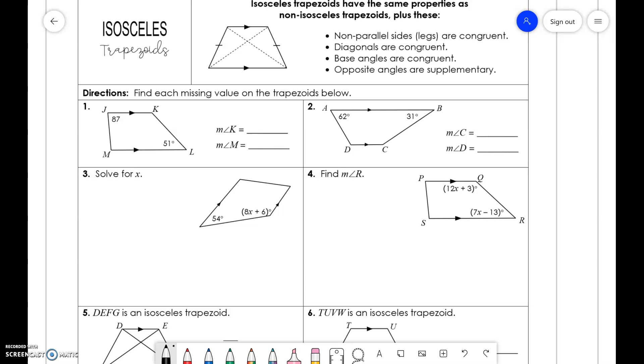So, for number one, this is a non-isosceles trapezoid, so we have to remember that those consecutive angles are supplementary. So, if you know this one is 87, to find angle M, we would do 180 minus 87 to get 93, and then for K, we would do 180 minus 51 to get 129.